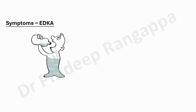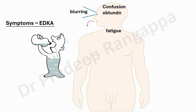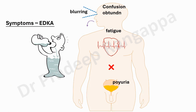The symptoms of EDKA are very similar to DKA — there is nothing different. Patients can have increased thirst, vomiting, blurring of vision, confusion, obtundation, fatigue, abdominal pain, and polyuria. Symptoms are often nonspecific and driven by the underlying trigger — whether sepsis, stroke, worsening AKI on CKD, liver dysfunction, post-surgery, or post-trauma. They can have extreme fatigability, obtundation, tachycardia, and hypotension, which tend to appear later in the disease course.